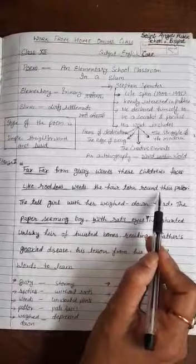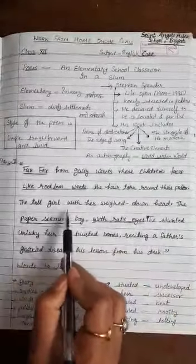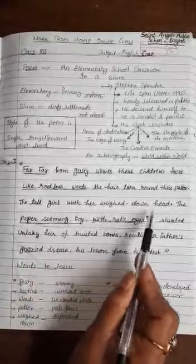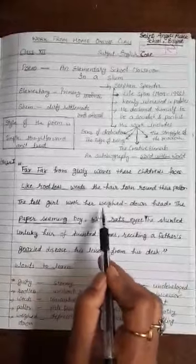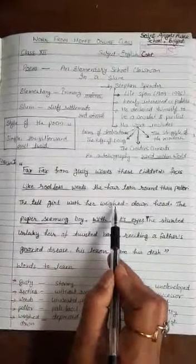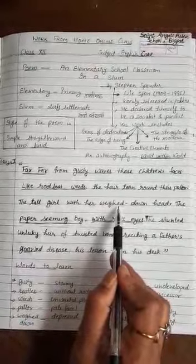The hair torn around their pallor. The hair means their hairs are scattered around their pale and withered face. They are looking very untidy with uncombed hair. The tall girl with her weighed down head. There is a girl who is sitting there with her head bowed down because she is in state of depression. She is feeling burden of her responsibility and she is depressed due to the perpetual state of her poverty.